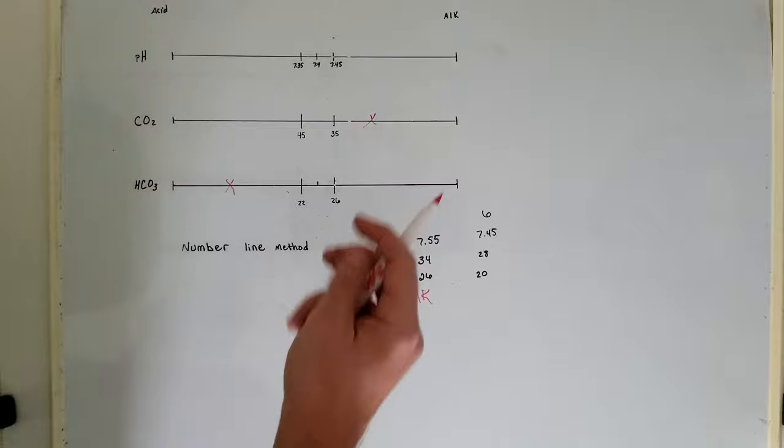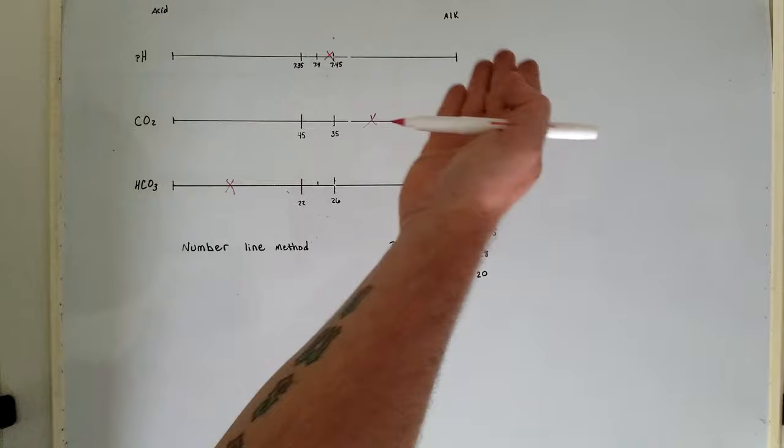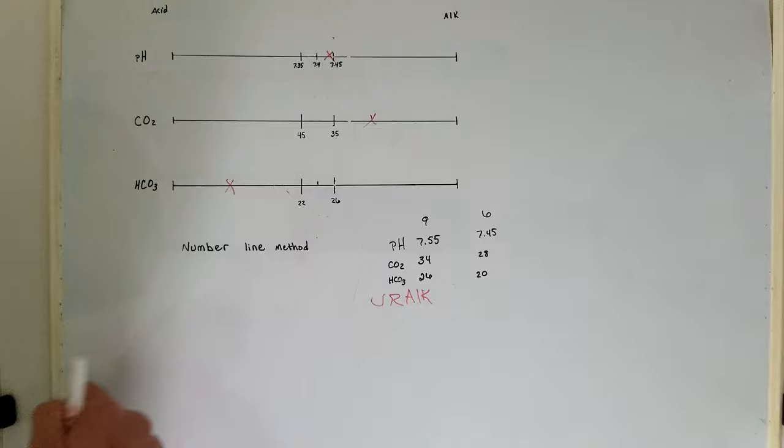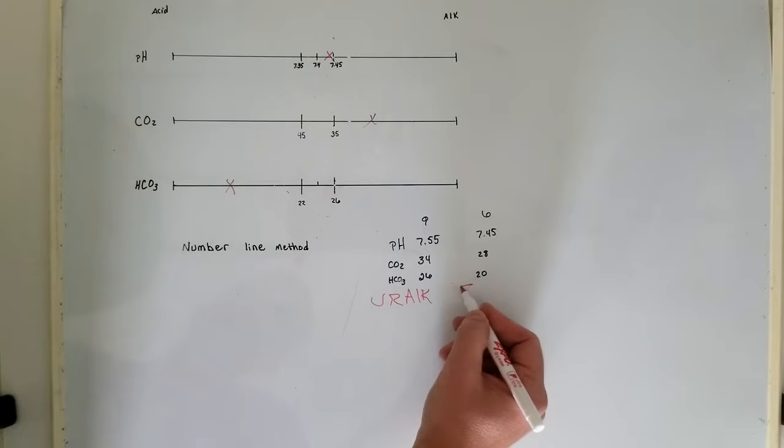But since these two X's are on the same side, you can see that it's respiratory alkalosis and the metabolic system is trying to compensate. So we have fully compensated respiratory alkalosis.